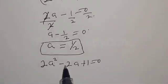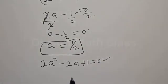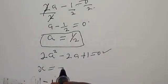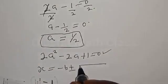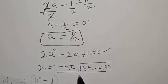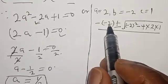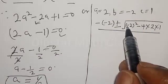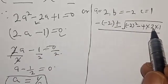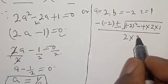Also, from 2a² minus 2a plus 1 equal to zero, this is a quadratic equation and we solve it using the quadratic formula: a equals minus b plus or minus square root of b² minus 4ac, all over 2a. Here b is minus 2, a is 2, and c is 1.